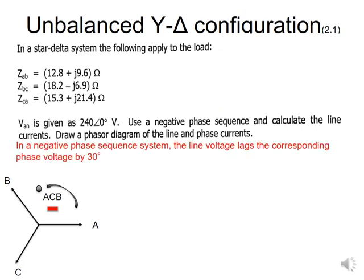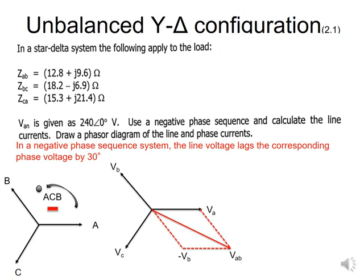In a negative phase sequence system, the line voltage lags the corresponding phase voltage. So I start by drawing va, vb, and vc as per the negative phase sequence. Then I draw the first parallelogram to find the first line voltage. I take va as my reference and draw the resultant below it — because in a negative phase sequence the line voltage must lag the corresponding phase voltage.